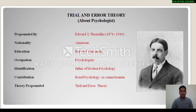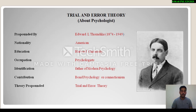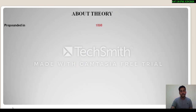This particular theory was propounded by Edward L. Thorndike, who was born in 1874 and died in 1949. He was an American by nationality. He completed his education from Harvard University and opted for psychology as his profession. He was identified as the father of modern psychology. His major contribution in the field of psychology is bond psychology or connectionism. His famous theory, trial and error theory, was propounded in 1898 in a book Animal Intelligence written by Thorndike.